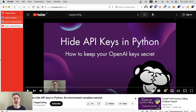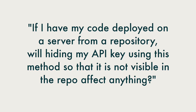I made a video about how to use .env files to keep your API keys secret when you're coding, but then I had a good question from Deepali who asked: if I have my code deployed on a server from a repository, will hiding my API key using this method so that it is not visible in the repo affect anything?